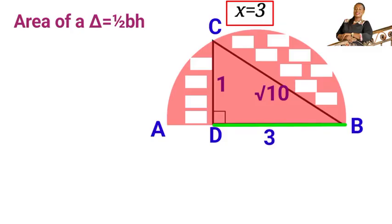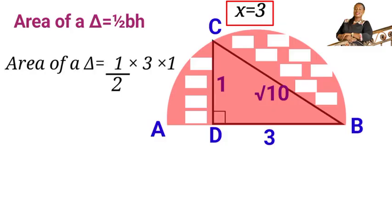Here, the base is 3 and the height is 1. So when we apply that in the formula, we have area of a triangle is half base times height, which is 1 over 2 times 3 times 1. So the area of this triangle will be 3 over 2.